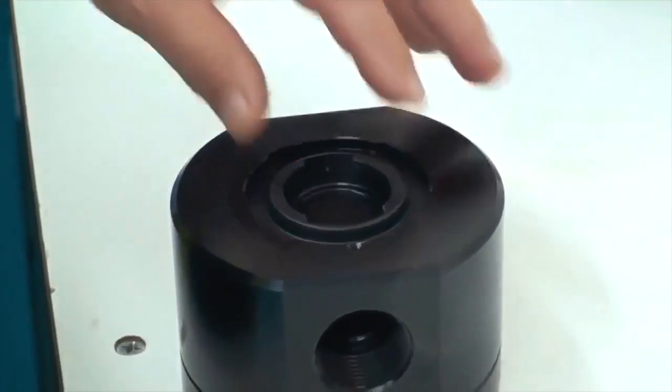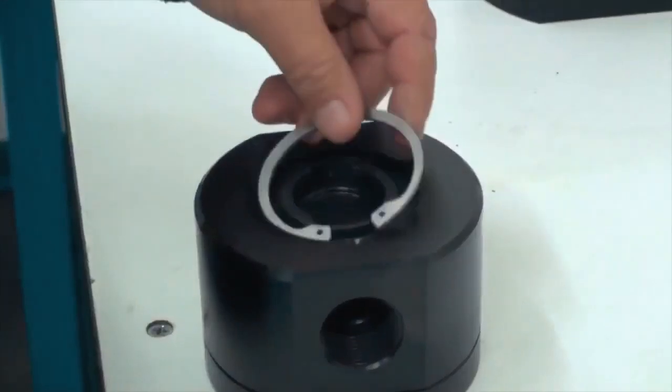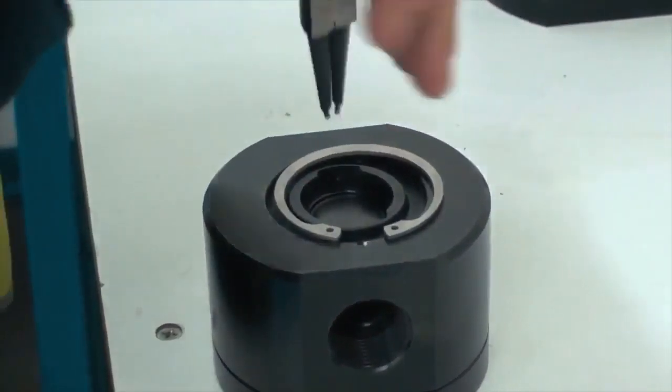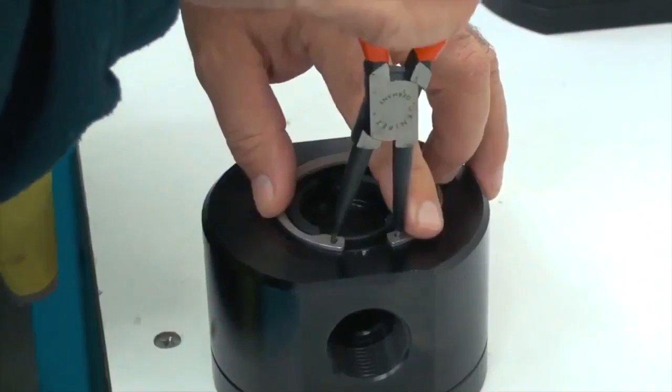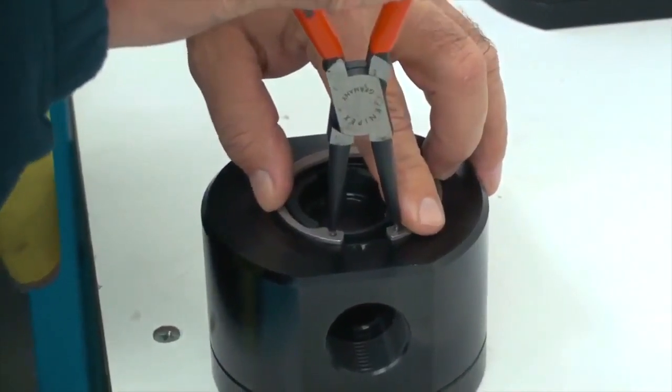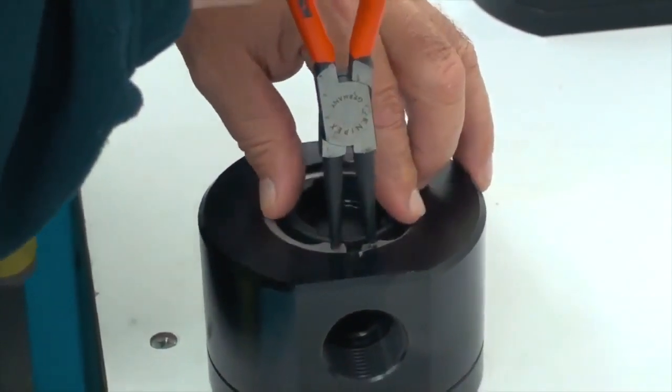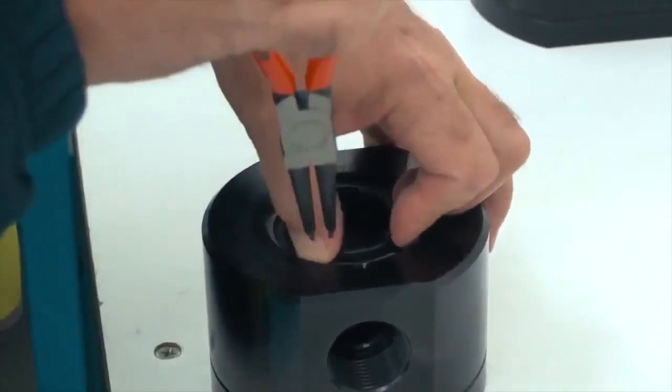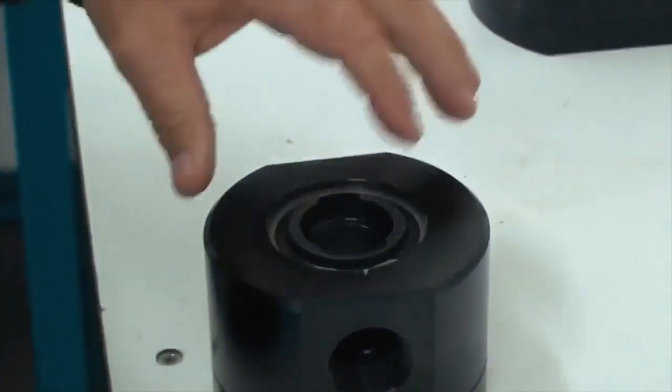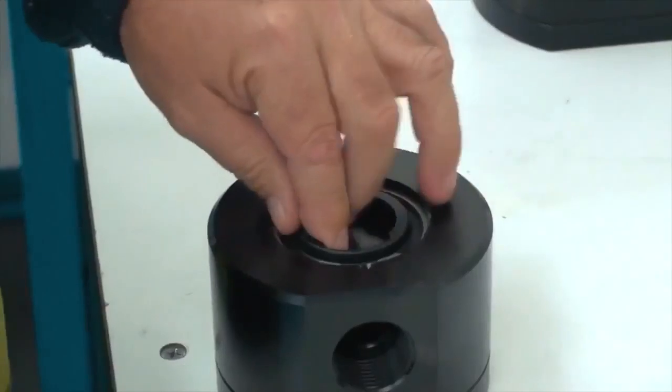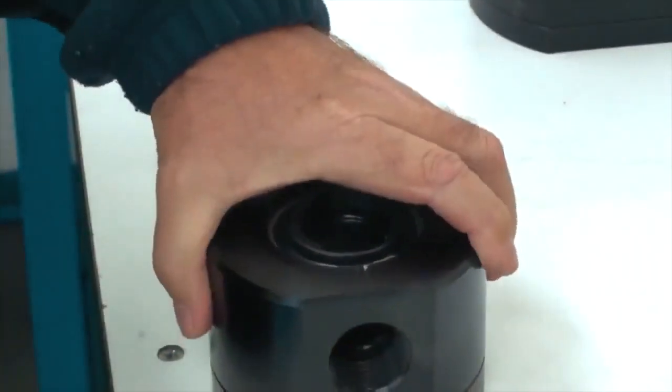We just pull it out, give it a clean and then just put it back in using a pair of circlip pliers. Grab hold of the circlip, put it back into the meter body and that's all ready to go. That's all in nice and tight and inspected.